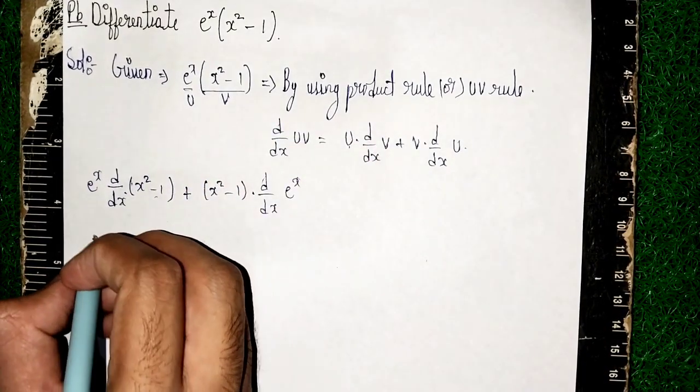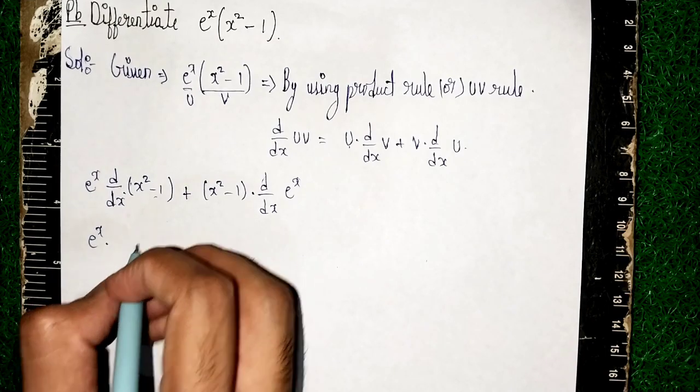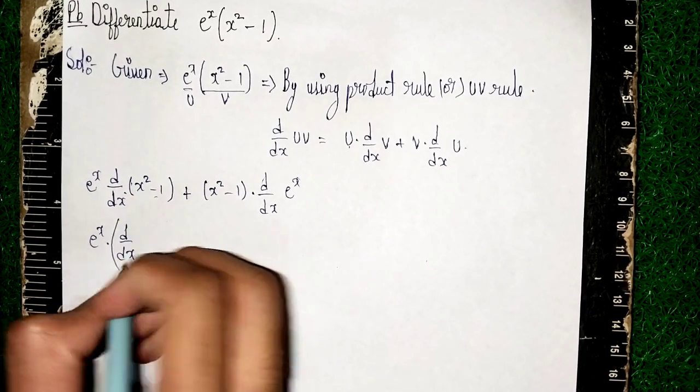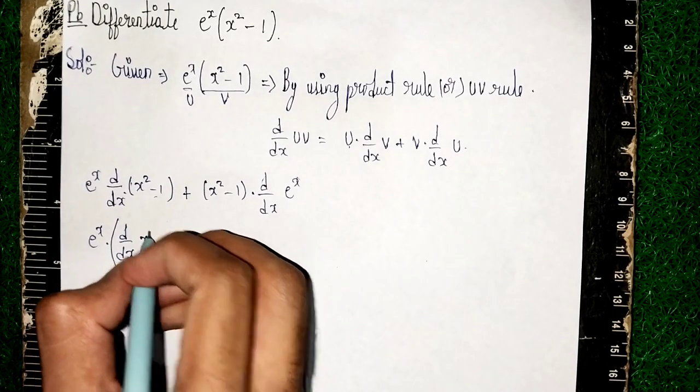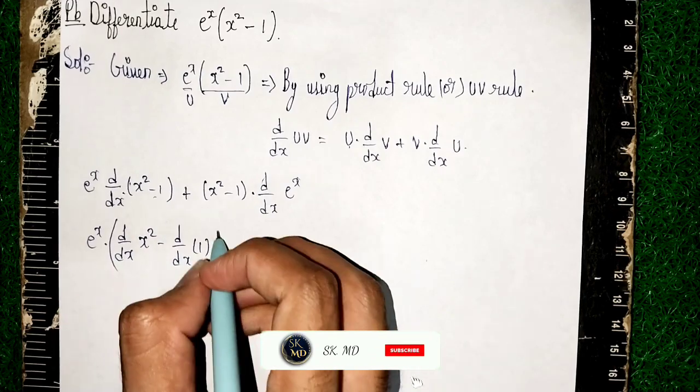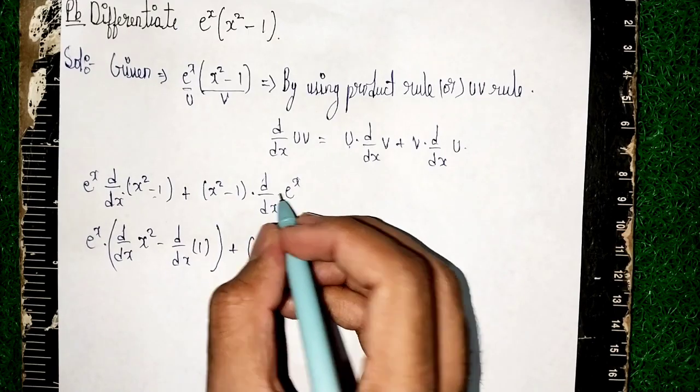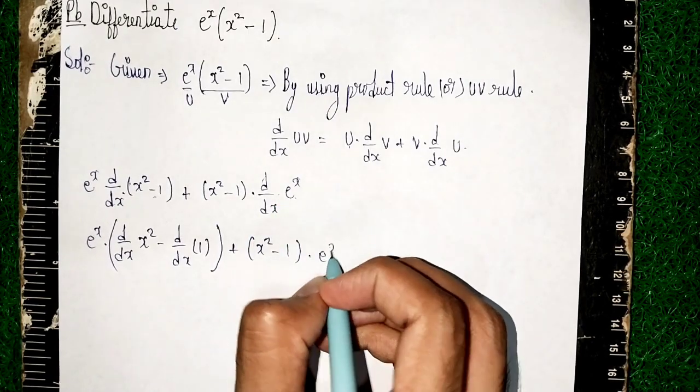e^x into d/dx of x^2 minus d/dx of 1. Then close. Plus x^2 - 1 into, now d/dx of e^x is what? e^x only.